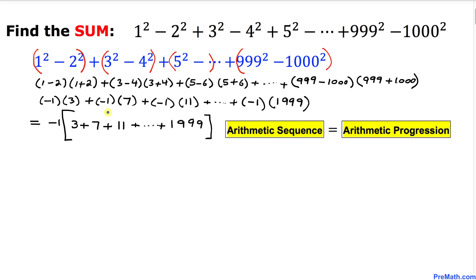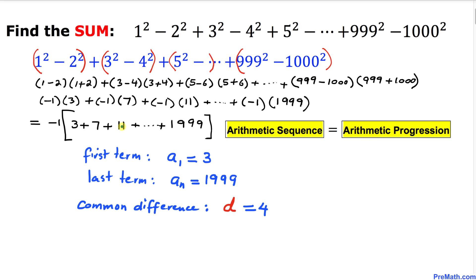Now let's focus on what's inside the bracket. We have an arithmetic sequence — sometimes called an arithmetic progression — because the common difference between consecutive terms is 4. If we start at 3 and add 4 repeatedly, we get 7, 11, 15, and so on.